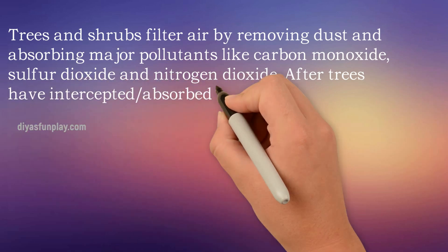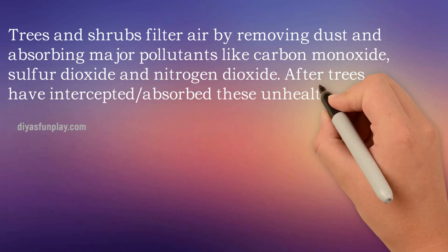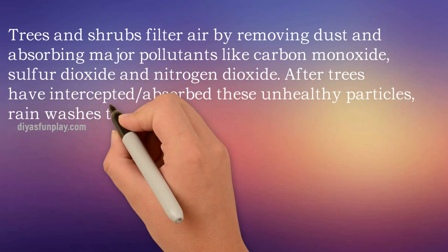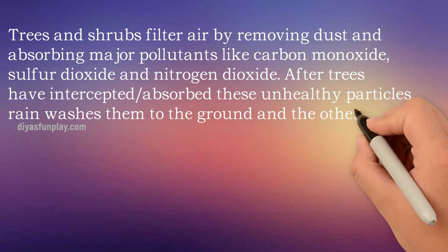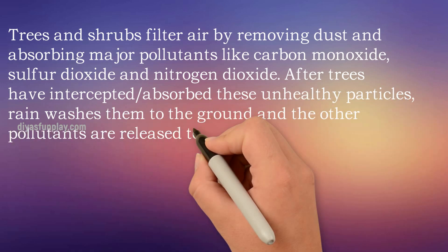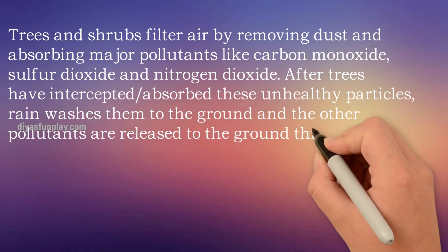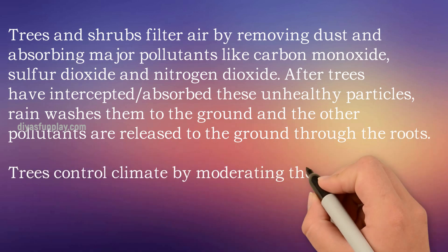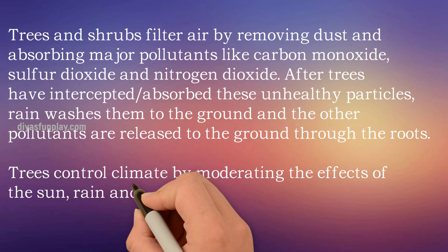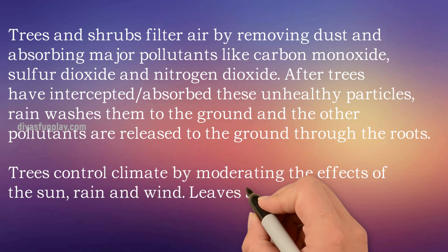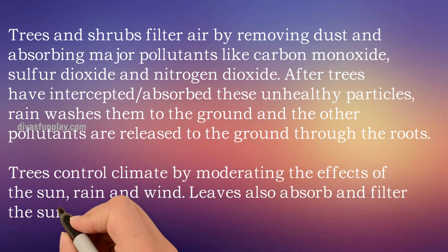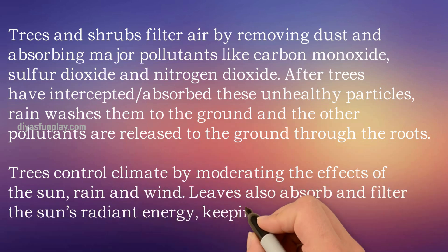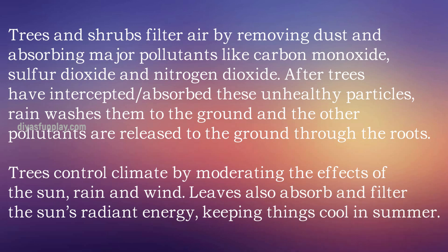After trees have intercepted and absorbed these unhealthy particles, rain washes them to the ground and other pollutants are released to the ground through the roots. Trees control climate by moderating the effects of the sun, rain and wind. Leaves also absorb and filter the sun's radiant energy, keeping things cool in the summer.